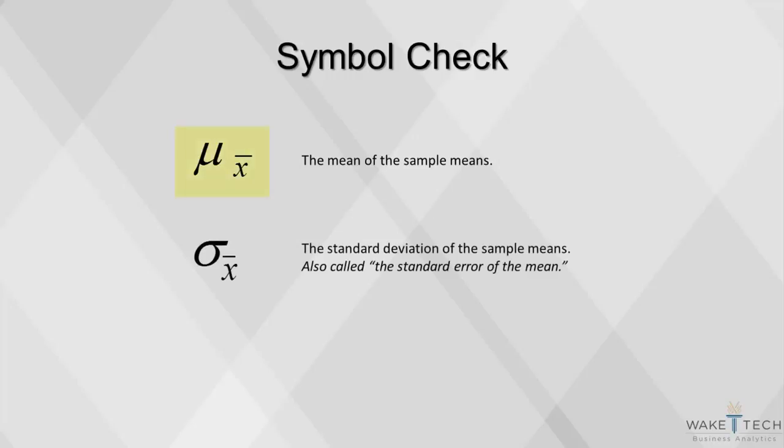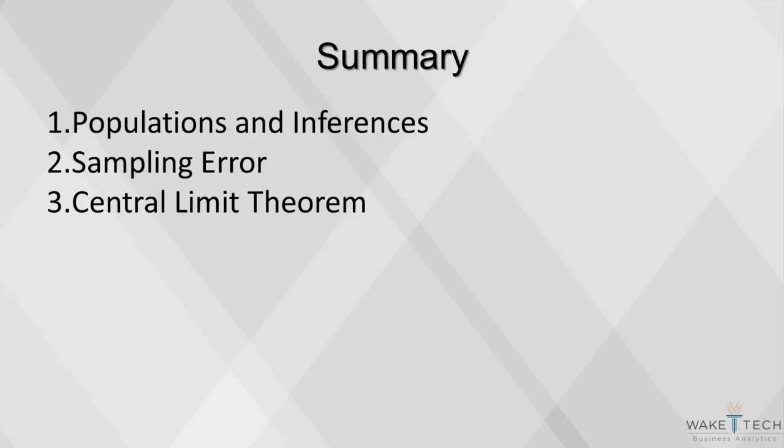Note the symbols here. The mean of the sample means is noted as mu of x-bar. The standard deviation of the sample means is written as sigma of x-bar, and is also called the standard error of the sample mean. That concludes our video.